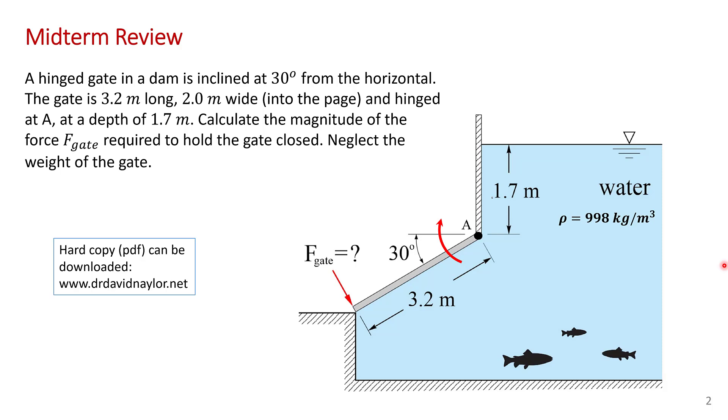It states a hinged gate in a dam is inclined at 30 degrees from the horizontal. The gate is 3.2 meters long and 2 meters wide into the page and it's hinged at point A at a depth of 1.7 meters. And the question wants you to calculate the magnitude of the force F gate required to keep the gate closed and you're told to neglect the weight of the gate.